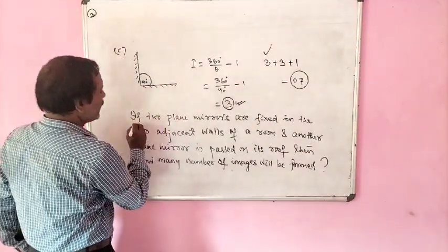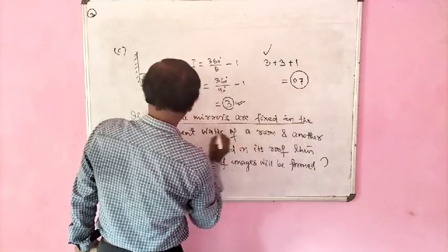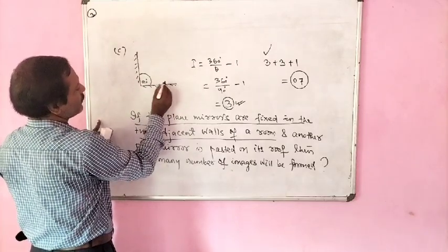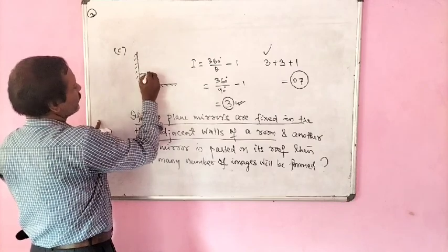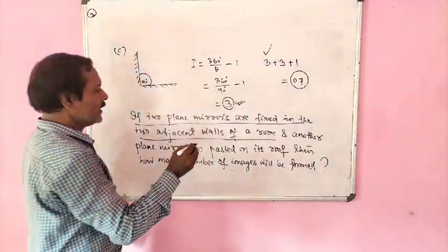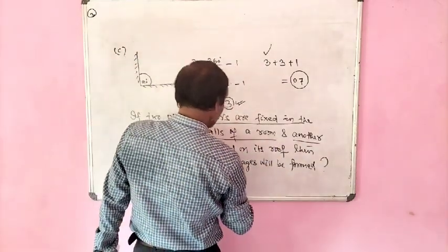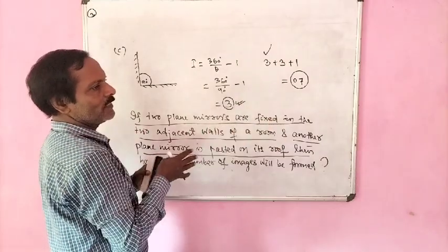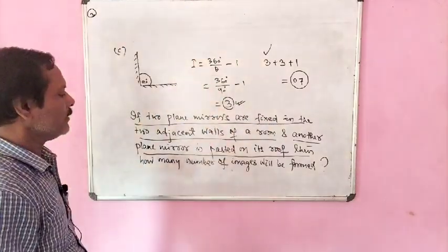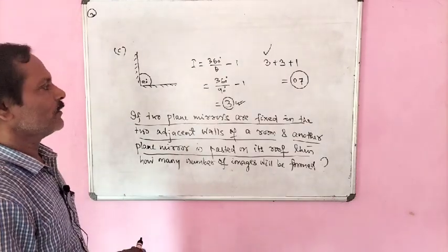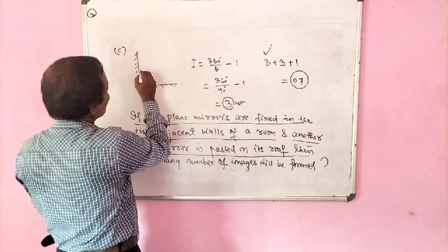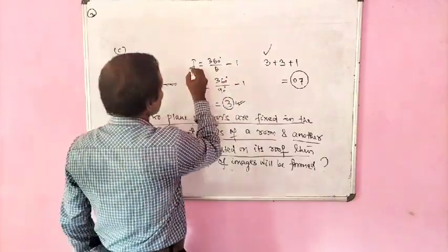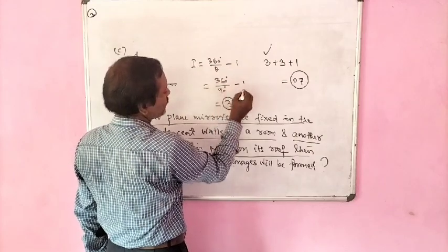If two plane mirrors are fixed in the two adjacent walls of a room, one plane mirror and another plane mirror with an angle of 90 degrees between them, and another plane mirror is pasted on the roof of this room, how many images will be formed? We know that if two plane mirrors are inclined at angle theta, the number of images is 360 divided by theta minus 1. Since the angle is 90 degrees, total images = 360/90 - 1 = 3.